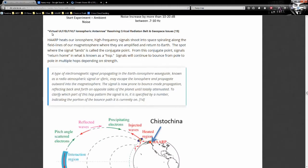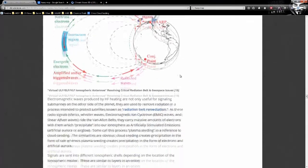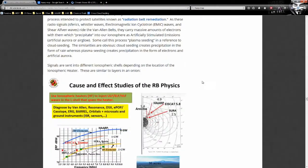So in a paper called Virtual ULF, ELF, VLF ionospheric antenna, resolving critical radiation belt and geospace issues. Now, so you say to yourself, why would they want to be doing this?